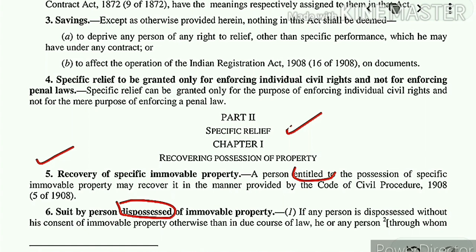Under Section 6, the court is not concerned with the title of the property — it will not check who the owner is. The court will only consider whether the plaintiff was in possession of the property and whether they were unlawfully dispossessed without following the procedures of law. If satisfied, the court will order that possession of the immovable property be given back to the plaintiff. This is a summary relief — you do not have to establish title. The important fact is that you need to have been in possession of the property and thereafter dispossessed.